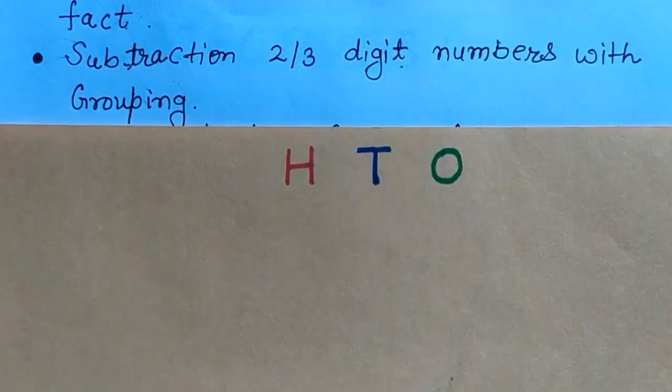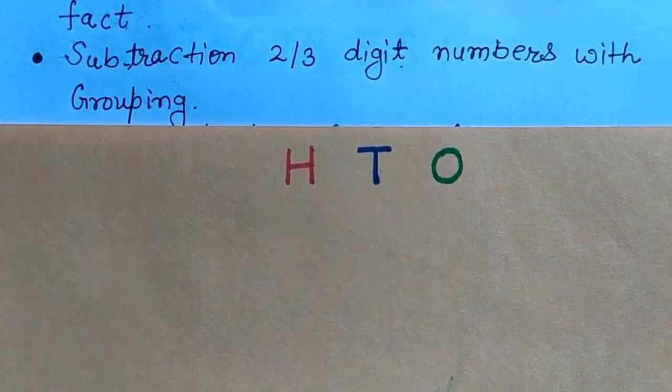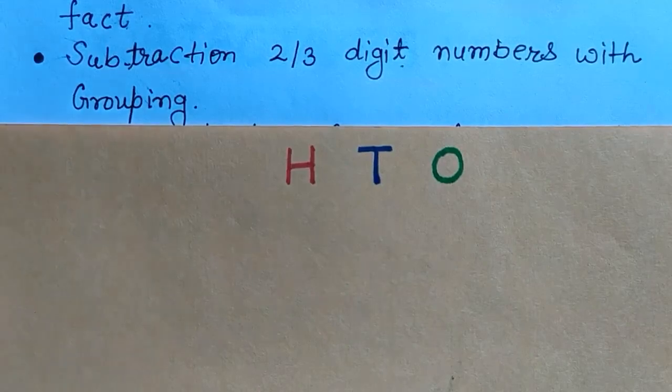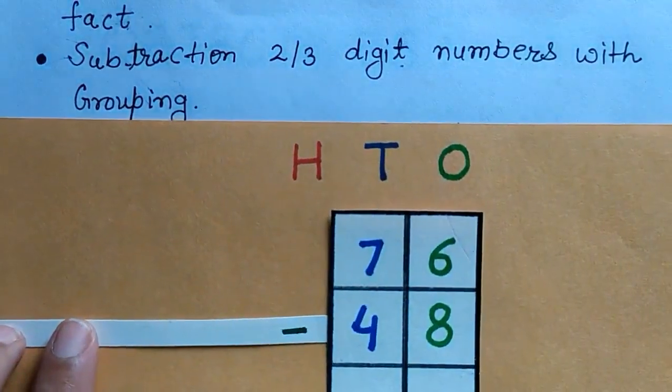Now we will learn about our second objective: subtraction of 2 and 3 digit numbers with grouping. Here are 2 digit numbers.